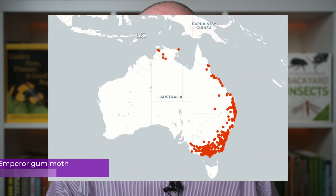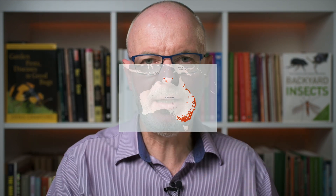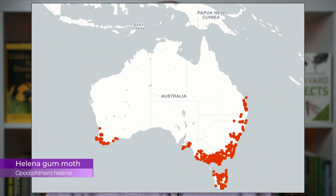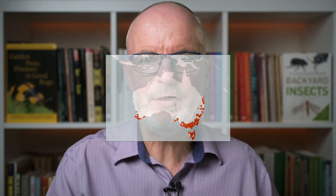The emperor gum moth occurs in the top end of the Northern Territory and in the eastern mainland states. The helena gum moth is found in southeastern Australia, including Tasmania, and is also found in southwest Western Australia.